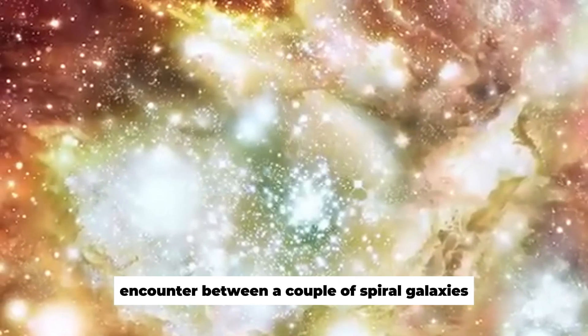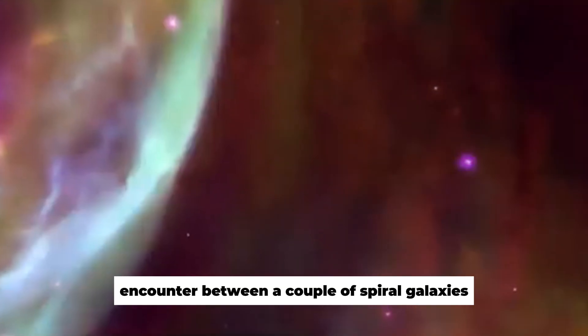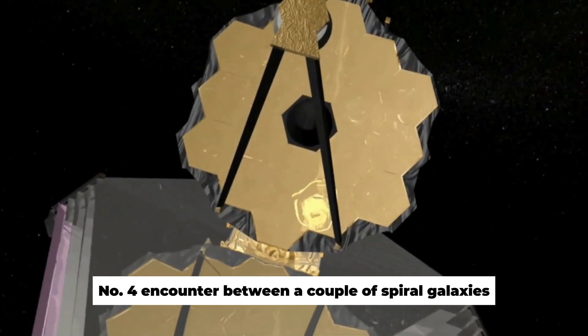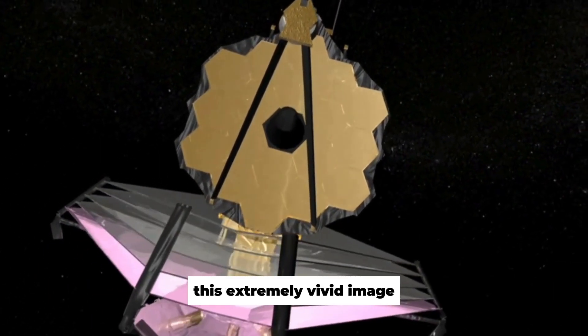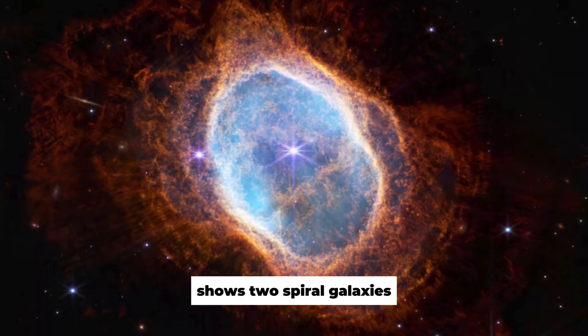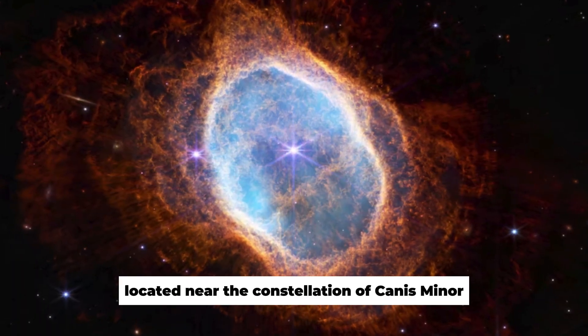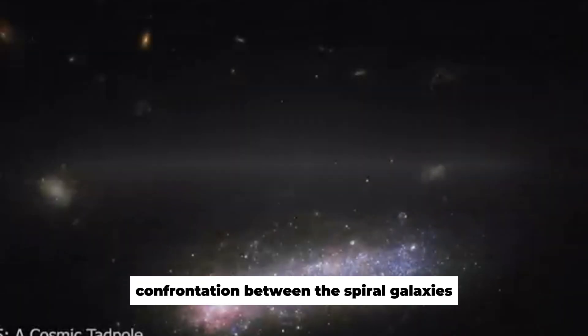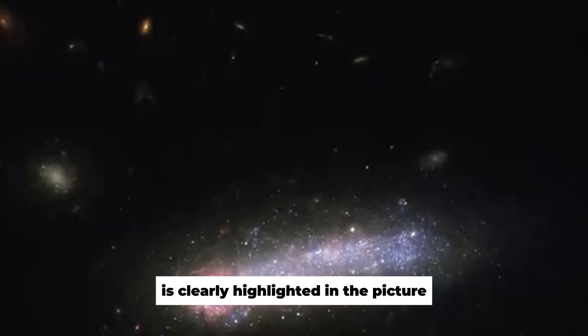Number 4: Encounter Between a Couple of Spiral Galaxies. This extremely vivid image captured by the Space Observatory shows two spiral galaxies located near the constellation of Canis Minor. The event of a confrontation between the spiral galaxies is clearly highlighted in the picture.